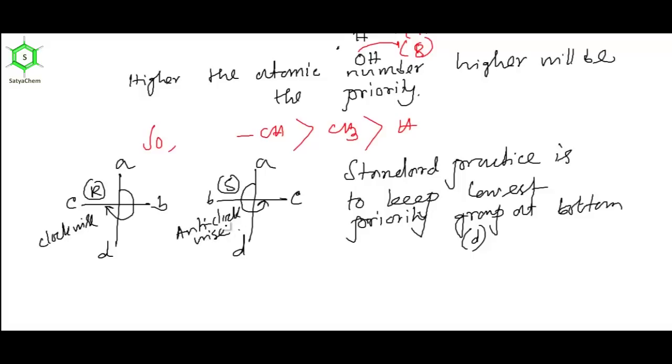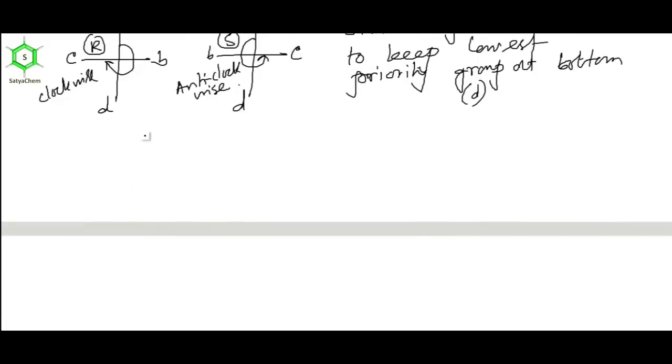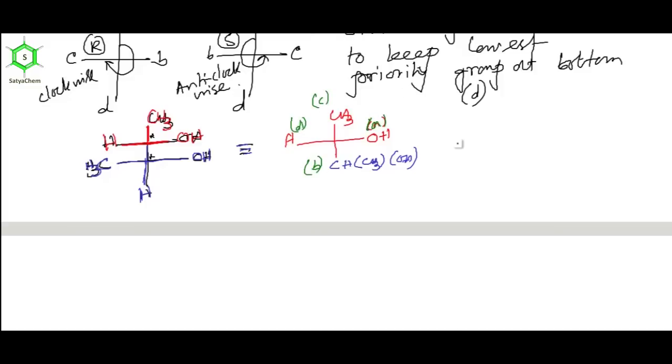Now this is the Fischer projection of the compound. Obviously, hydroxyl group has highest priority, then CH2OH, CH3, and methyl groups, then hydrogen. So oxygen is A - it has highest priority - then B, then C.